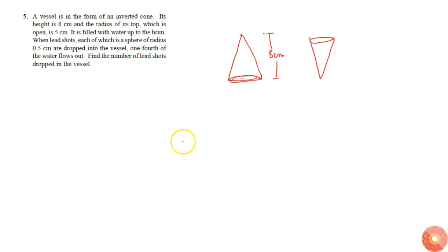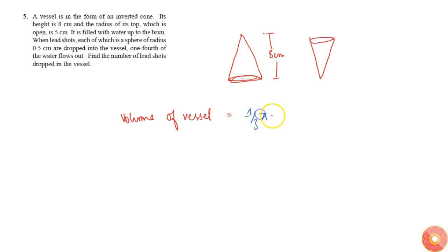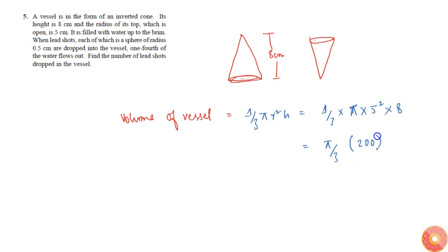First, we find the volume of the vessel. The volume of the inverted cone equals one-third pi r squared h. That is one-third into pi into five squared into eight, which equals pi by three into 25 into 8, which equals 200π/3 cubic centimeters. This is the volume of the vessel.